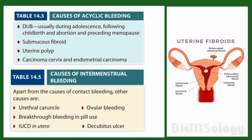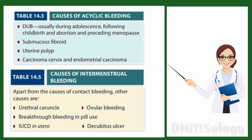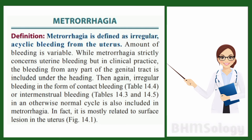Further causes include submucous fibroid, carcinoma cervix, endometrial carcinoma. Apart from these, there can be urethral caruncle, ovular bleeding, breakthrough bleeding in pill use, IUCD that is intrauterine contraceptive device, decubitus ulcer, and otherwise normal cycle also included in metrorrhagia. In fact, it is mostly related to surface lesion in the uterus.